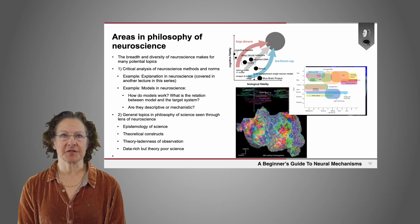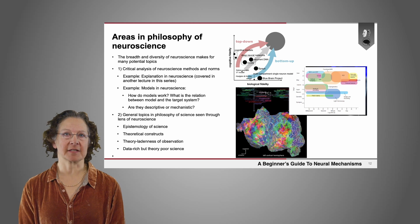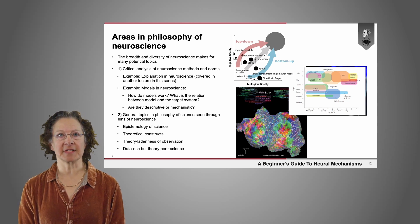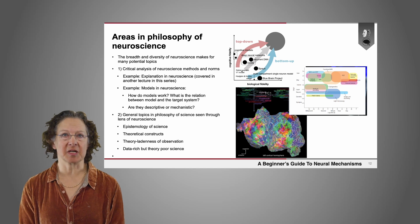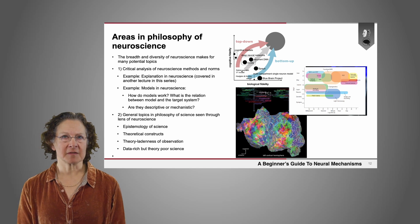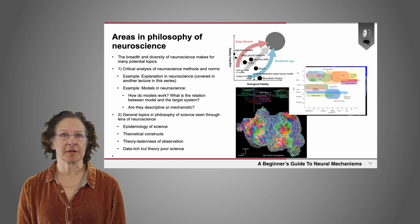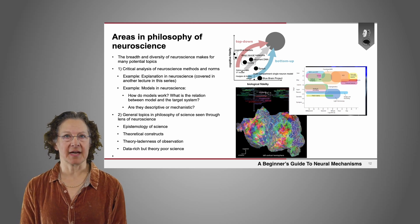Another example is the question of the role of models in neuroscience. How do models work? What's the relation between a model and the target system? How do we take insights from the operation of those models and apply them to our understanding of the brain? What are models doing anyway — are they just descriptive, are they mechanistic, and what sorts of inferences can we make given the models that we have?